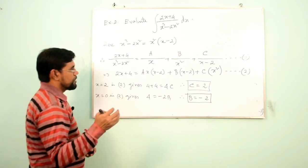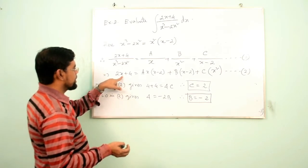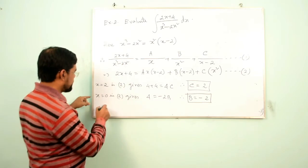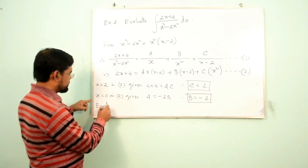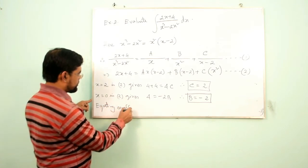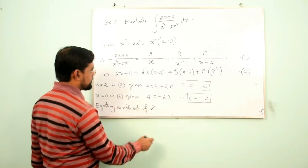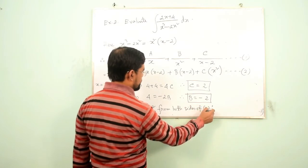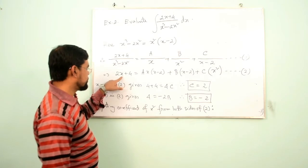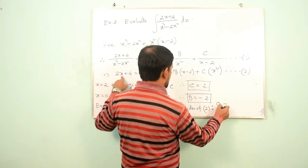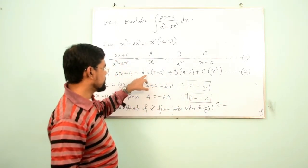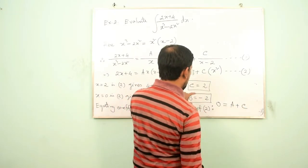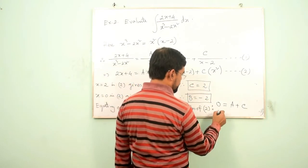To find A, we use the second method: equating the coefficient of x² from both sides of Equation 2. The left side has no x² term so its coefficient is 0. On the right side, the coefficient of x² is A + C. Since C = 2, we get A + 2 = 0, therefore A = −2.